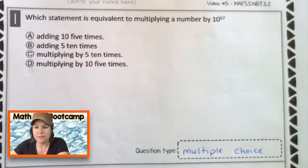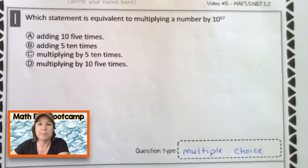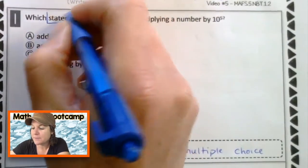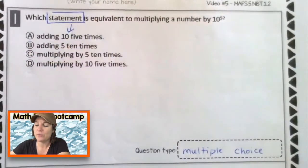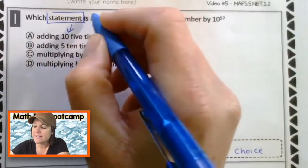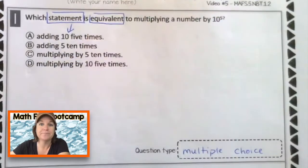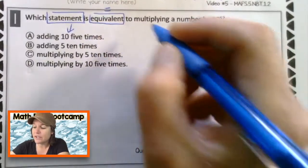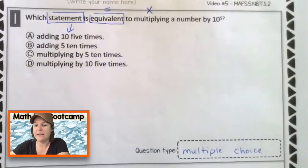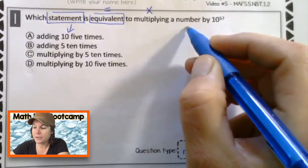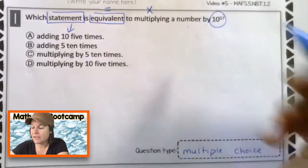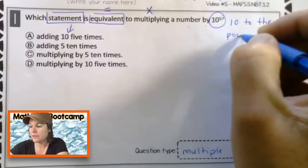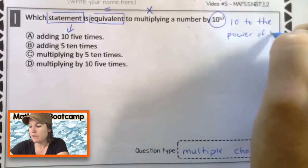Which statement is equivalent to multiplying a number by 10 to the fifth power? Let me mark up my text here to slow it down. So which statement, where are the statements? Right down there. Which one of those is equivalent? What does equivalent mean? Equal, right? So which statement, which one of these sentences is equivalent to multiplying a number by 10 to the fifth power? So that's 10 to the power of five.